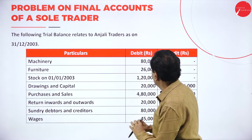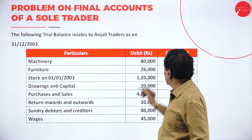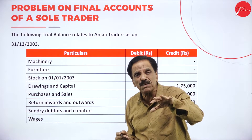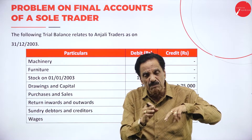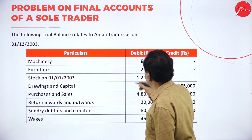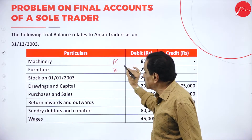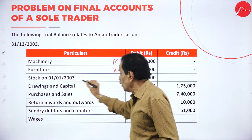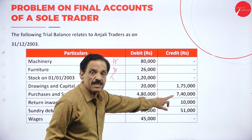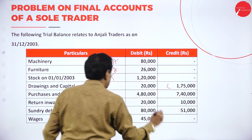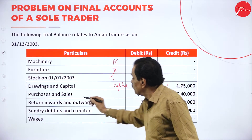They have given a trial balance with debit side and credit side. The debit side shows assets and expenses; credit side shows incomes and liabilities. You must be in a position to bifurcate where the items can come — either trading account, profit and loss account, balance sheet, or asset side. Machinery is an asset; furniture is an asset. Stock is opening stock — trading account. Drawings and capital: capital is 1,75,000, which will come on the liability side. Drawings should be deducted from capital. Purchases and sales: purchases of 4,80,000 will come on trading account debit side; sales on credit side.